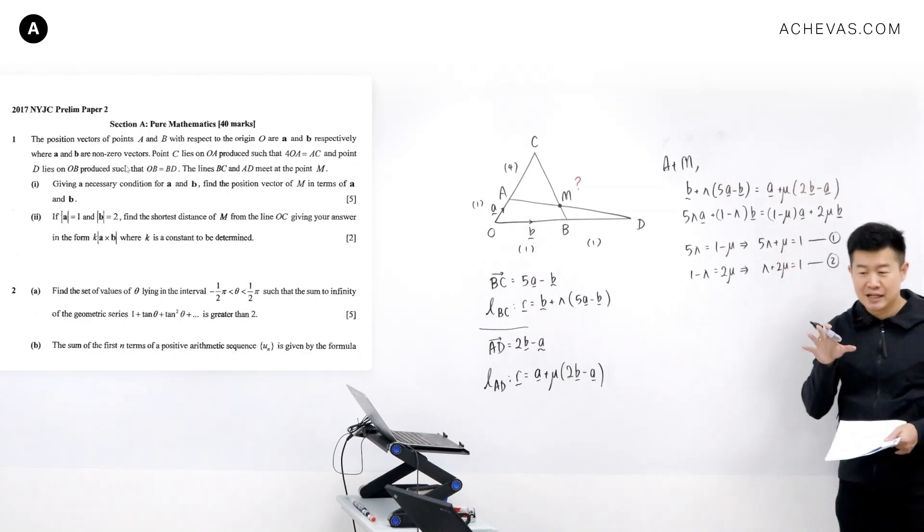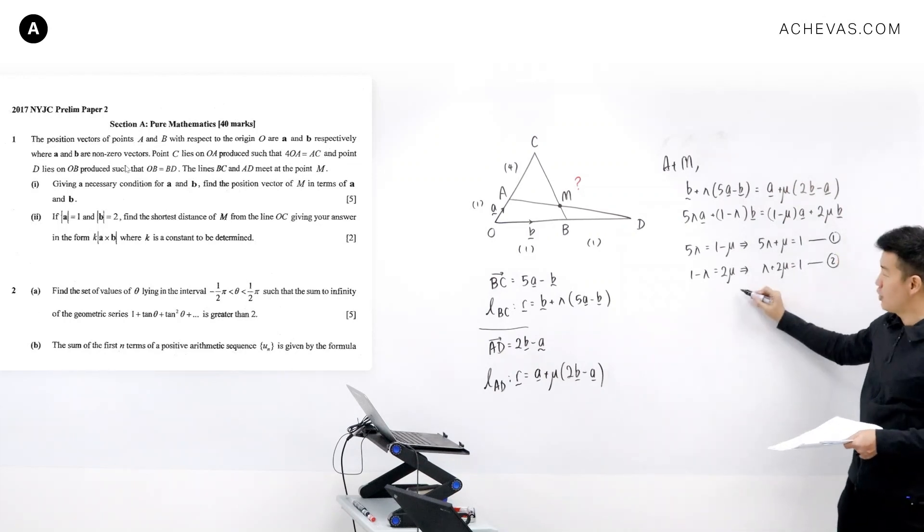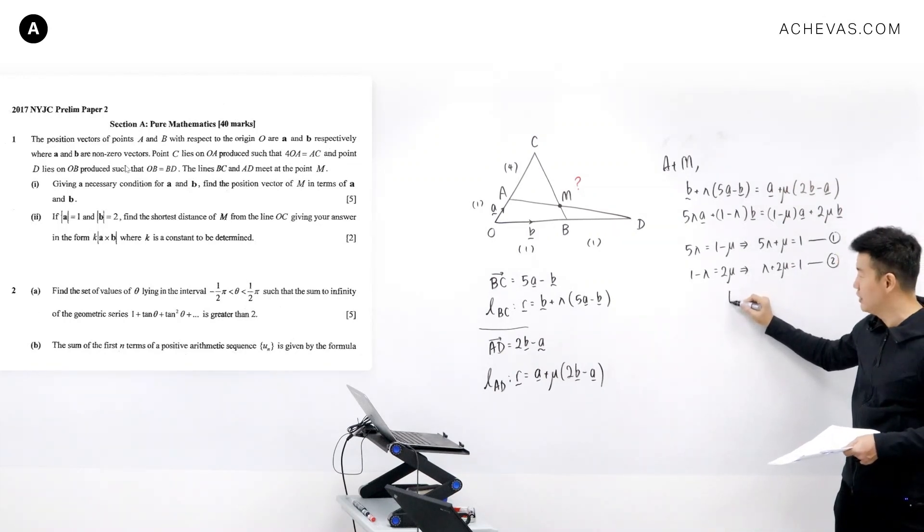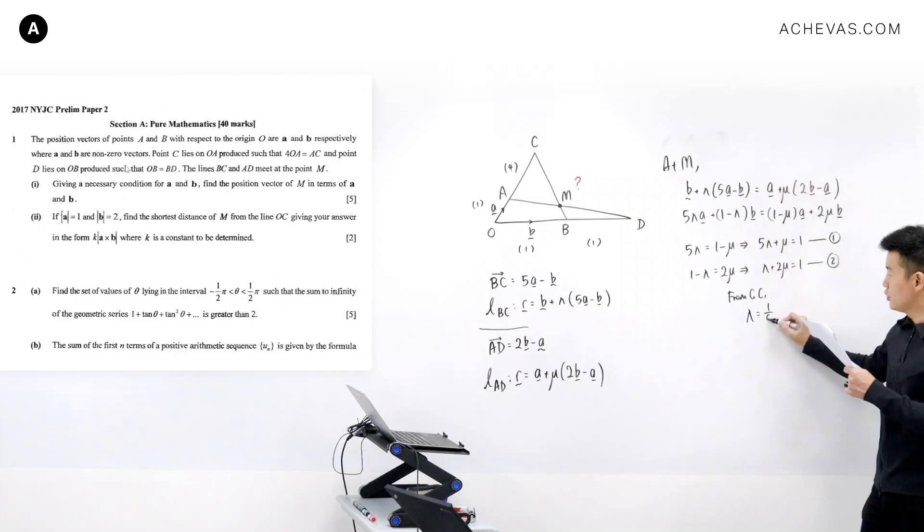We have a pair of linear equations that can be solved simultaneously using the graphing calculator. So of course we should use our calculator. From our graphing calculator, solving for lambda and mu, lambda is going to be equal to 1 over 9 and mu here is going to be equal to 4 over 9.